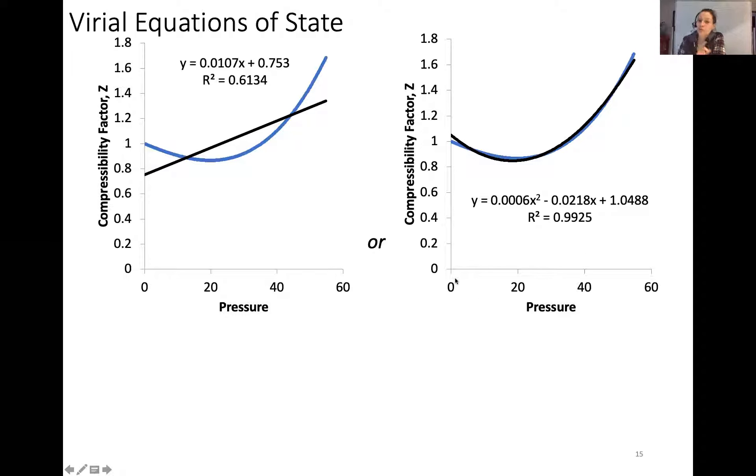These are the same data as we saw before, the compressibility versus pressure. Notice the axes however, I've got zero to 60 instead of zero to 500, so I'm really zooming in. Most gases will drop down and actually all of them will drop down initially and then go back up.